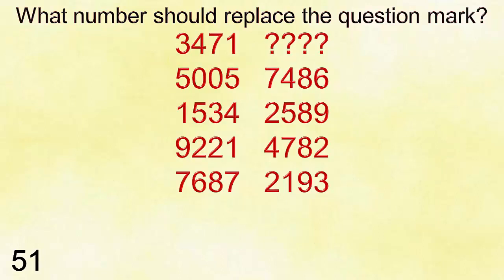Answer is one hundred thirty. Number fifty-one: three thousand four hundred seventy-one, question mark, five thousand five, seven thousand four hundred eighty-six, one thousand five hundred thirty-four, two thousand four hundred eighty-nine, nine thousand two hundred twenty-one, four thousand seven hundred eighty-two, seven thousand six hundred eighty-seven, two thousand ninety-three.